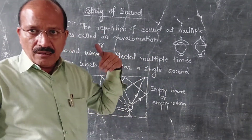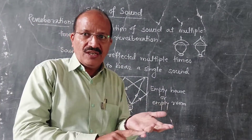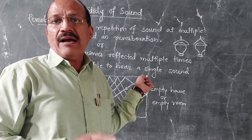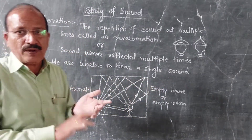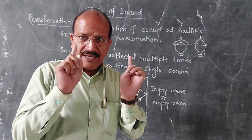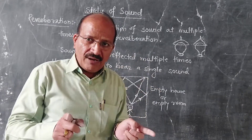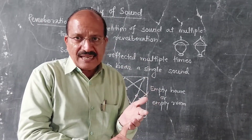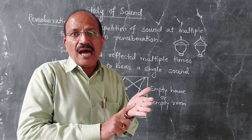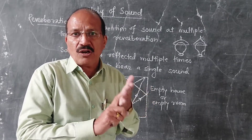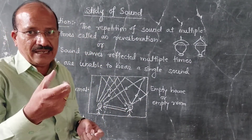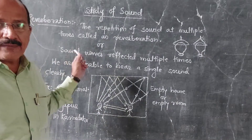It is called as reverberation. In our house, we use sofas, divans, curtains, paper, and calendars to avoid reverberation. The clothes are bad conductors of sound and hence they absorb the sound, and hence we can hear that sound clearly. In this way we can avoid reverberation.